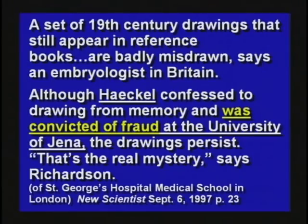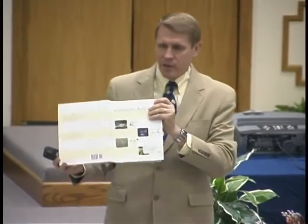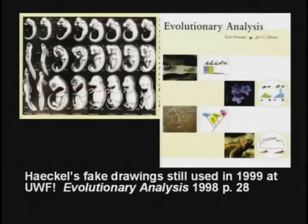It's been proven wrong since 1875 and they still keep it in the books. It's still used in the college textbook Evolutionary Analysis, 1998 edition, used at University of West Florida — the exact same chart of Ernst Haeckel, only proven wrong since 1875. I know it takes a while to get textbooks up to date, but that's long enough. I think 130 years — they ought to be able to get it out by now.